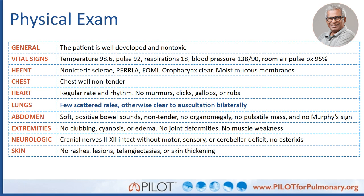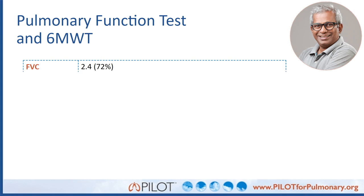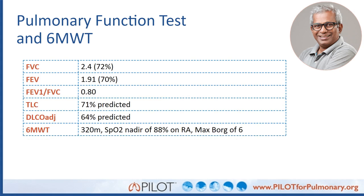On exam, he appears well-developed and non-toxic. His vitals are largely normal, though his room air pulse ox is 95%. On lung auscultation, you hear a few scattered rales but he is otherwise clear. Skin and joint exam are unremarkable. Pulmonary function testing shows both his FVC and FEV1 are reduced with a preserved ratio, total lung capacity is mildly reduced, and DLCO is reduced — a mild restrictive abnormality. On six-minute walk test, he walks 320 meters with an SpO2 nadir of 88% on room air and a max Borg score of 6, indicating significant dyspnea.